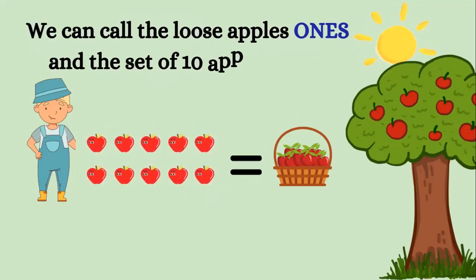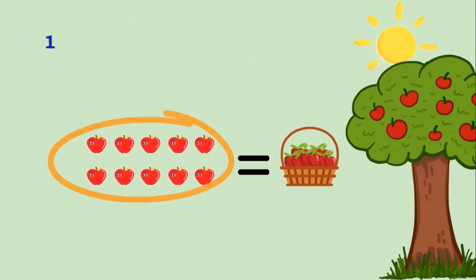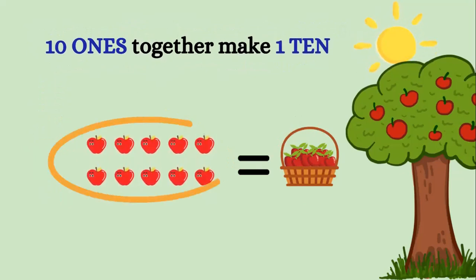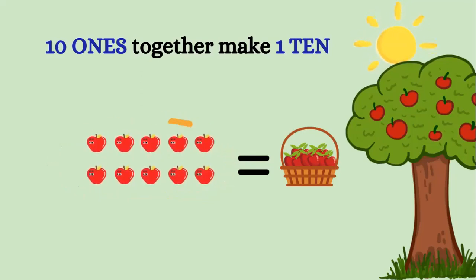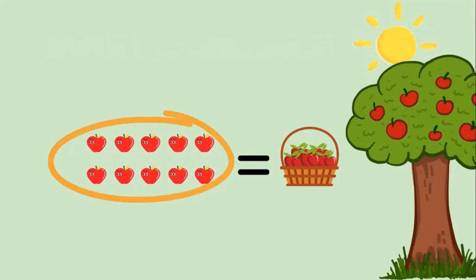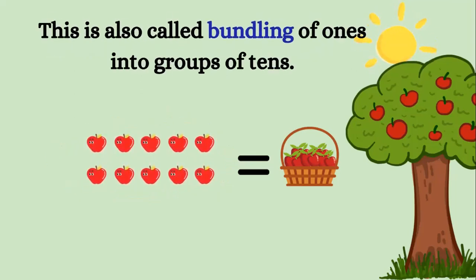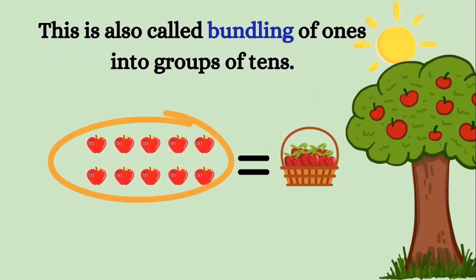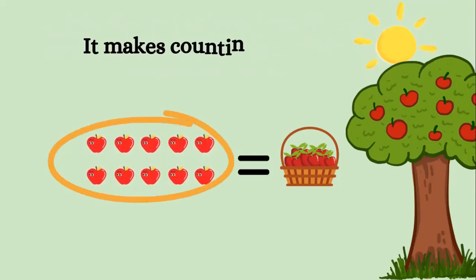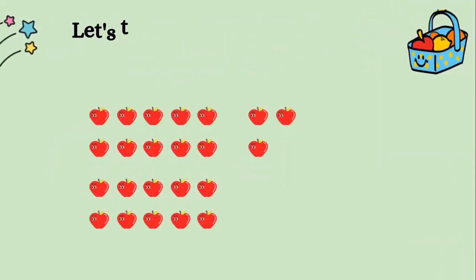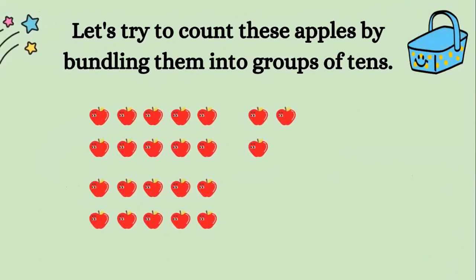We can call the loose apples ones, and the set of ten apples tens. Ten ones together make one ten. This is also called bundling of ones into groups of tens. It makes counting easier.